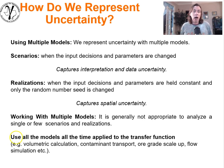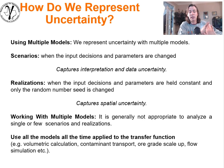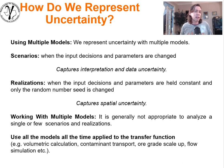Use all the models all the time to apply them to the transfer function. When we have a decision to be made, we take the function that gets us as close to dollars and value as possible — that could be flow simulation, volumetric calculation, something about contaminant transport or flow rates. You apply all the models to that transfer function so you can make a good decision. Credit to Clayton Deutsch, my PhD advisor, who was really focusing on this idea of 'use all the models all the time' on a speaking tour just last year.